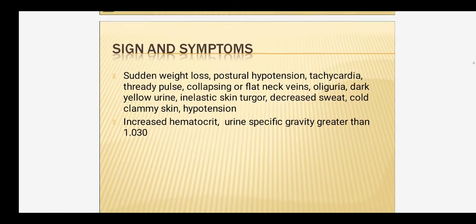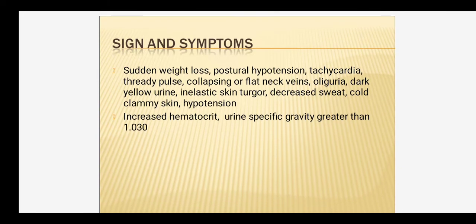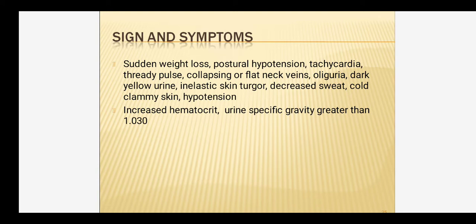The signs and symptoms of extracellular fluid volume deficit are: sudden weight loss, postural hypotension, tachycardia, thready pulse, collapsing or flat neck veins, oliguria, dark yellow urine, inelastic skin turgor, decreased sweat, cold and clammy skin, and hypotension. On blood test, there is increased hematocrit. Urine specific gravity is greater than 1, meaning urine is concentrated. Plasma is also concentrated so hematocrit is increased.